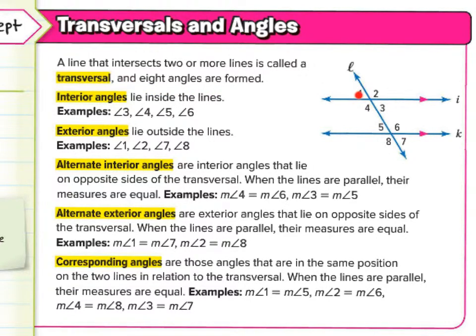You can see the eight angles right there: one, two, three, four, five, six, seven, eight. Eight angles are formed. The angles are right where the two lines meet.